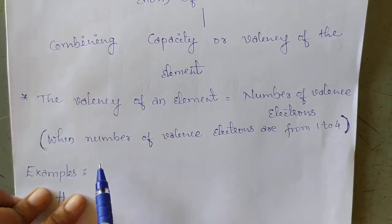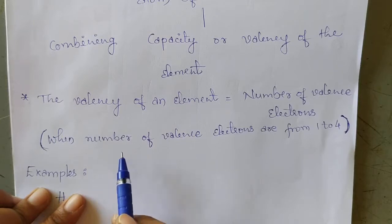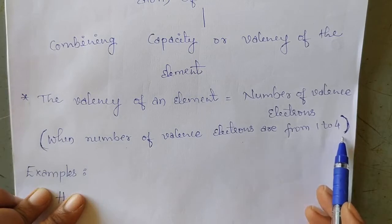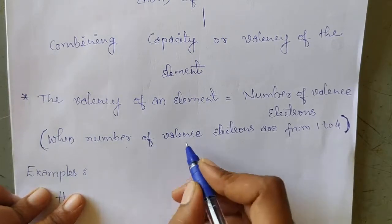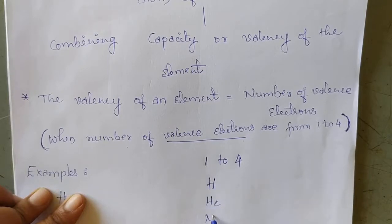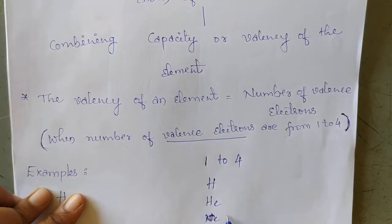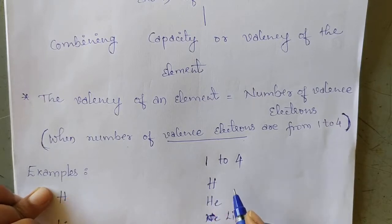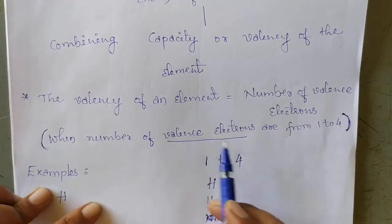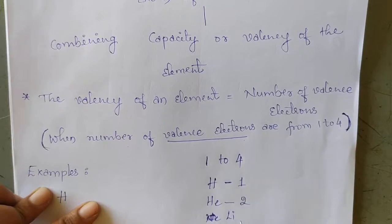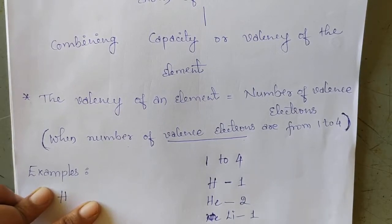Children, for elements when the number of valence electrons are from 1 to 4, for example hydrogen, lithium, boron — these elements have outermost electrons, that is valence electrons. In hydrogen, one valence electron is present. In helium, two electrons are present. In lithium, one electron is present. In case of boron, two valence electrons are present. In case of sodium, atomic number is 11 and electron distribution is 2, 8, 1 — so in the outermost shell, one electron is present.